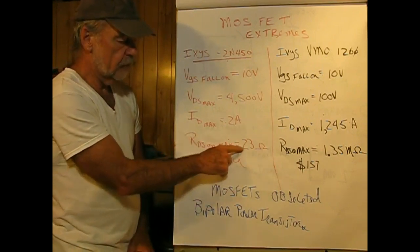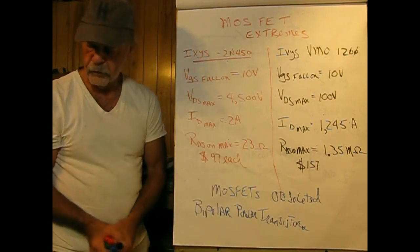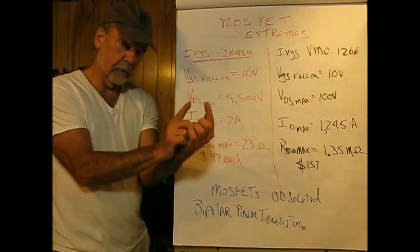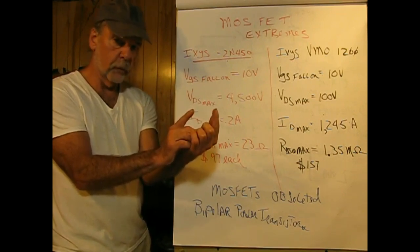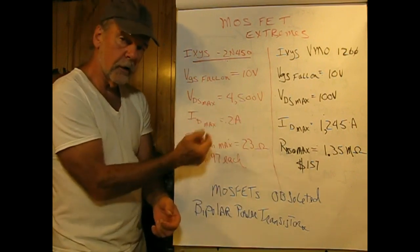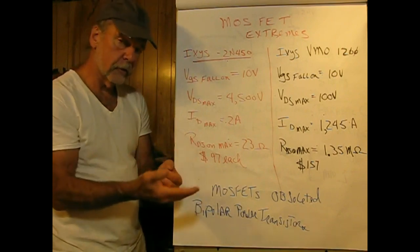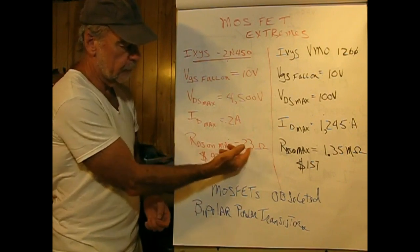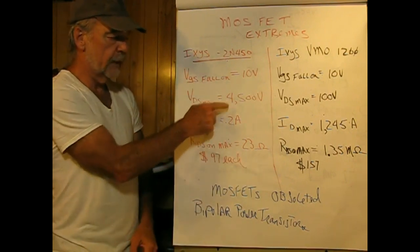RDS on max is a large 23 ohms, and what that has to do with is physically the gate and source, being N-channel wells embedded in the P-type material, have to be moved apart for this high voltage so it doesn't arc across. Therefore, the virtual N-channel underneath the gate is longer, and we pick up that resistance of 23 ohms to withstand that voltage.